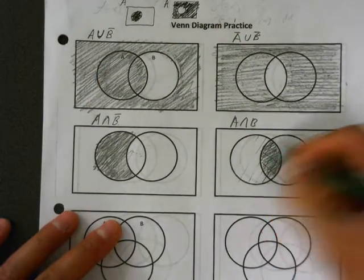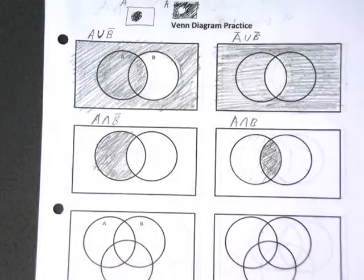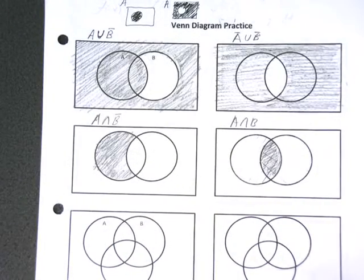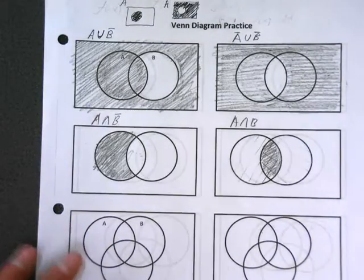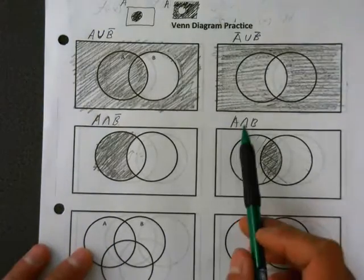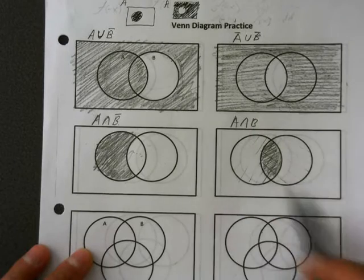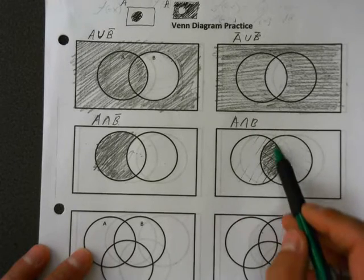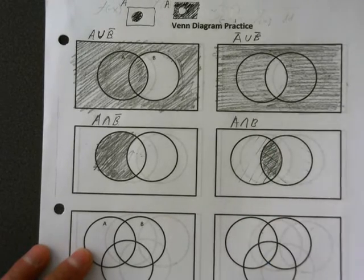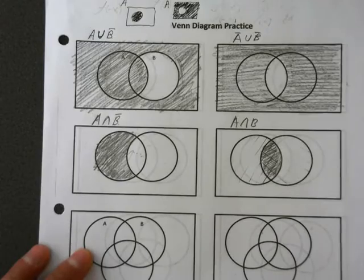Now, if you want to, you can double hatch, but that really takes a lot of time. All you need is inside of A and inside of B — so which one is inside of both? This one. All right, let's go on to threes.